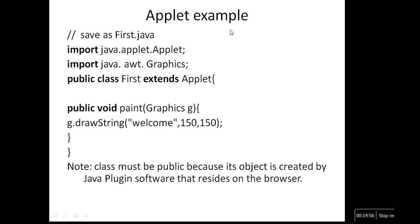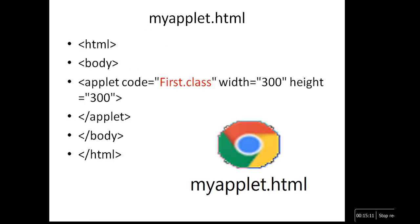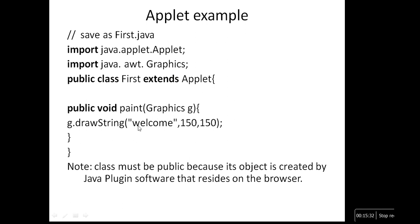This is the program written in Notepad and saved as first.java. We imported applet and graphics, and extended Applet. We are performing only the paint method from AWT to check a sample applet drawing a string. The HTML passes first.class as the code to the applet tag. When you click on the HTML file, the browser will open and the string 'Welcome' is going to be displayed in the browser. This type is called an applet.